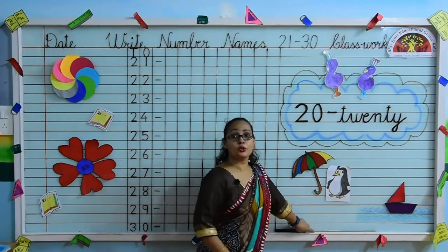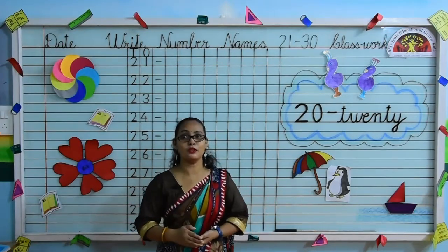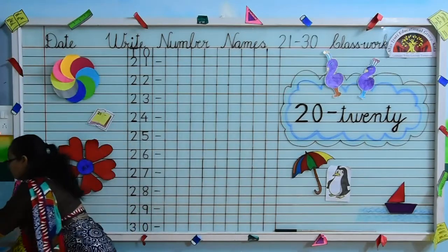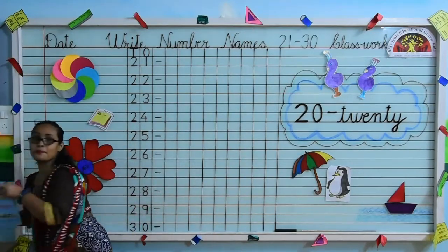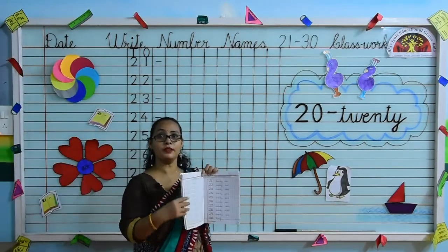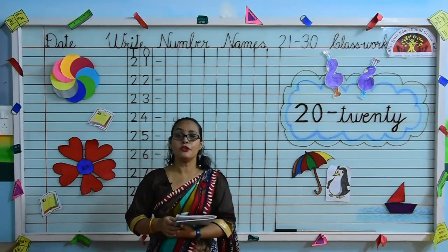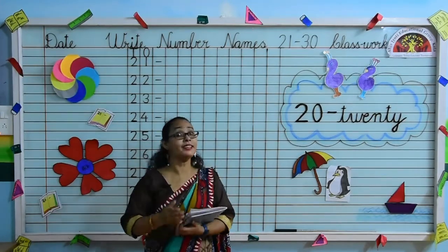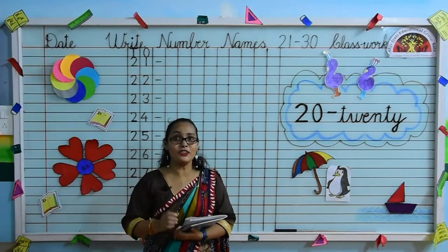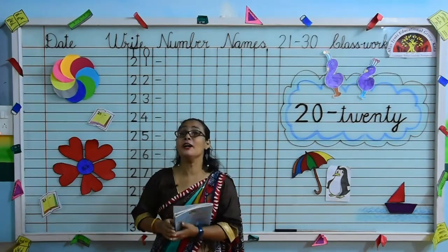Today we will write number names 21 to 30. So take out your maths workbook 1, open page number 55. Kids, don't forget to mention the date and classwork. So kids, get ready to write. Take out your pencil.